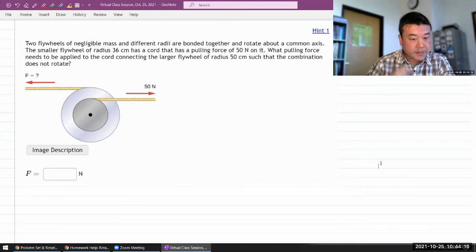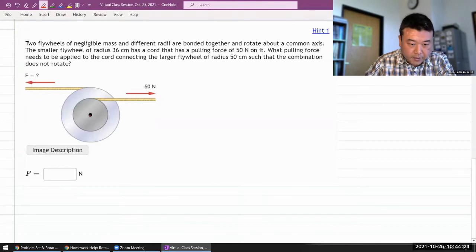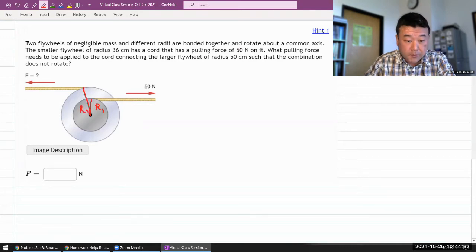So this is what the question says. It says two flywheels of negligible mass and different radii, so I guess radius R1 and radius R2, are bonded together and rotate about a common axis.